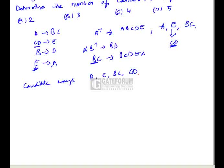So in total there are four candidate keys, and the correct option is option C.